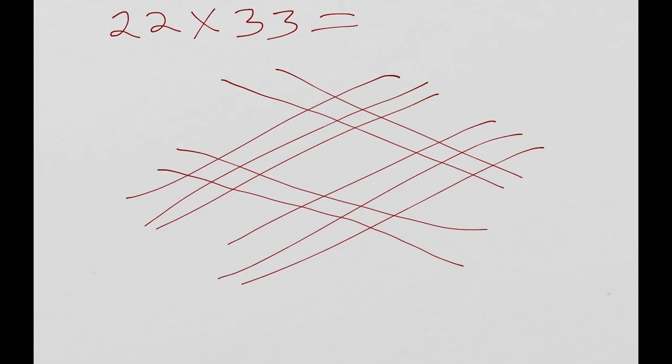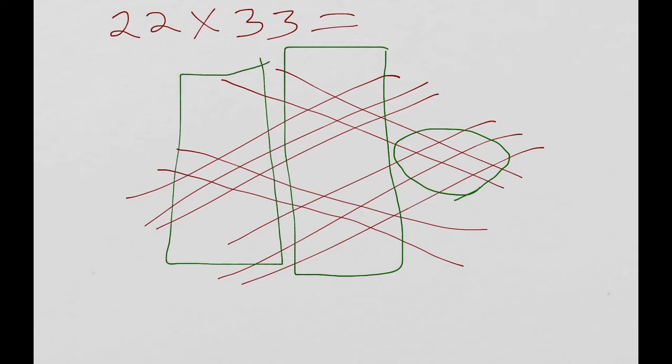Then let's draw 3 lines and then 3 more lines. Now, what we have to do is separate this into zones because once you get into the larger numbers, you must separate into zones. So we're going to have a right zone, which is all of the points where our lines intersect on the right side of the picture, and then a center zone, and then a left zone. And these are all the intersections on the left side.